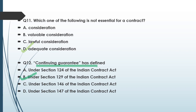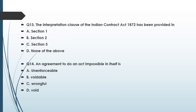Question number thirteen: The interpretation clause of the Indian Contract Act, 1872 has been defined in — option A: section 1, option B: section 2, option C: section 3, option D: none of the above. Section 2 is the definition or interpretation clause. Within section 2, you will find definitions of contract, voidable contract, consideration, and more. Definitions are given in the interpretation clause, so you should know this.